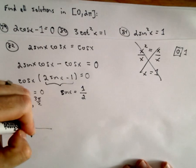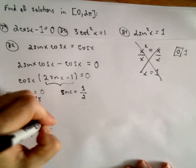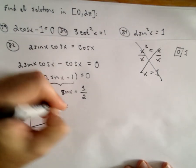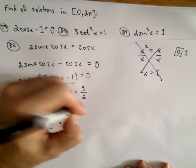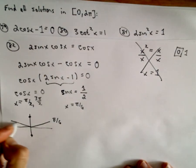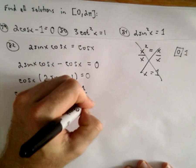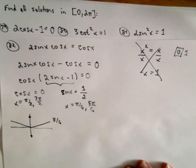Sine of x is going to equal 1/2. Let's see, I think the first angle I would get would be at pi over 6, and you'll also get an angle in the second quadrant, and that would correspond to 5 pi over 6.